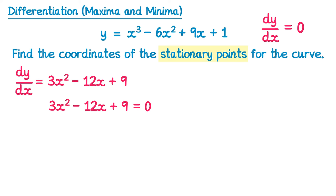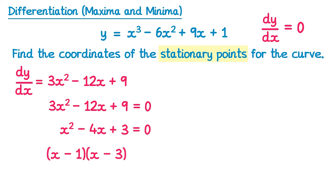This is a quadratic. There's a common factor of 3, so dividing both sides by 3, on the left you get x squared minus 4x plus 3, and on the right 0. You can now factorise this as (x − 1)(x − 3) equals 0, which gives two solutions: x equals 1 and x equals 3.